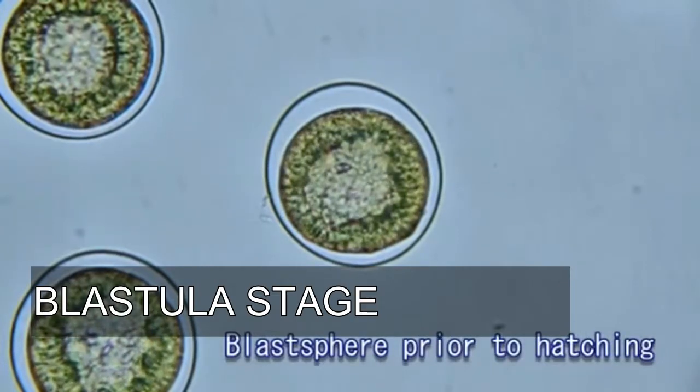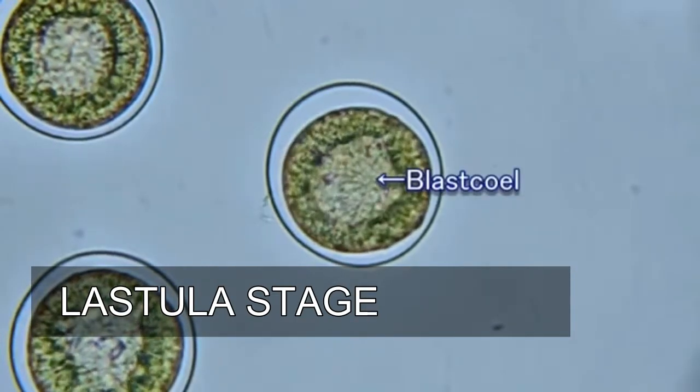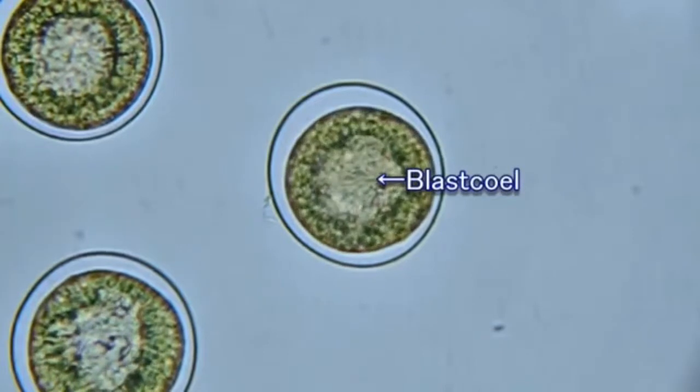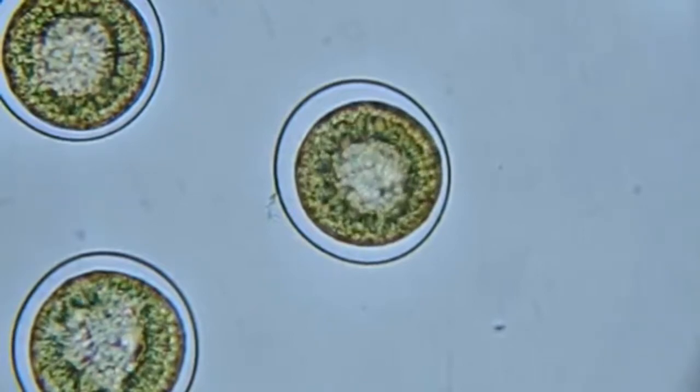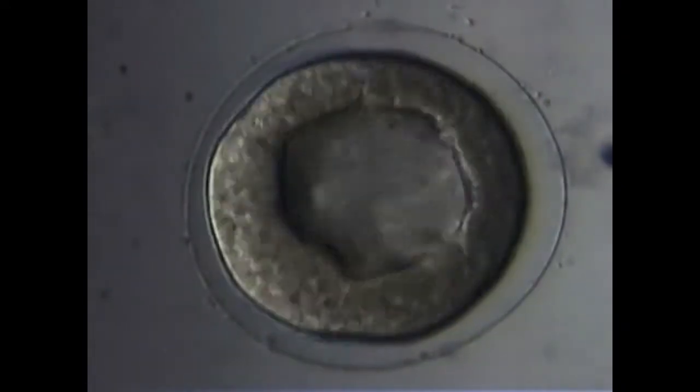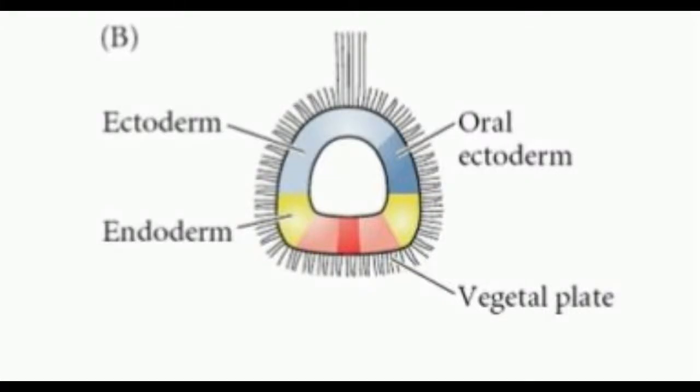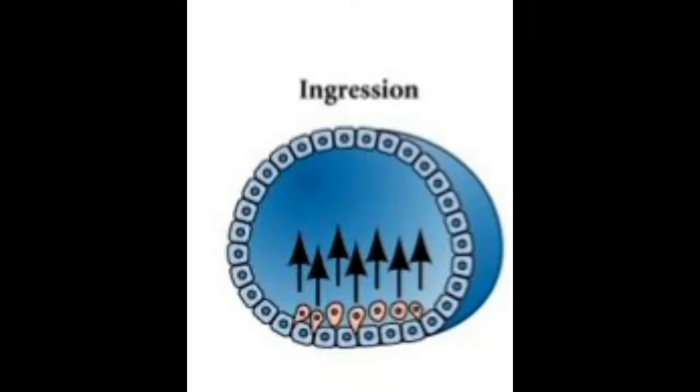During subsequent cleavages, blastomeres become arranged around a central cavity called the blastocele, and the developing embryo at this stage is called the blastula. With formation of the blastocele and blastula, the process of blastulation occurs. Cilia develop on the outer surface of the blastula, those at the animal pole become particularly long and are called the apical tuft. In the late blastula stage, cells begin to detach from the vegetal pole of the blastula and move into the blastocele; these cells undergo ingression. The ingressing cells are called the primary mesenchyme cells.